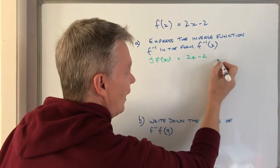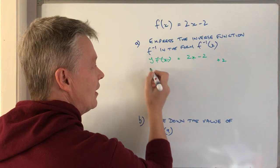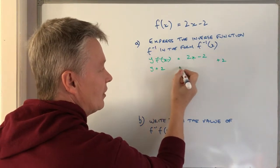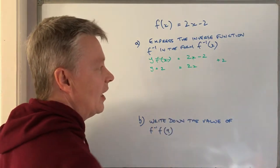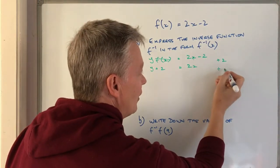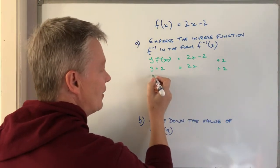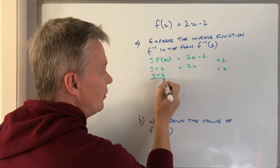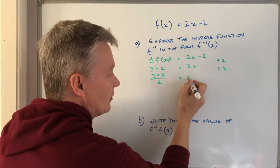So if I do that I'm going to add 2 to both sides that gives me y + 2 = 2x, and then in order to get x on its own I'm going to divide through by 2 and that's going to give me (y + 2)/2 = x.